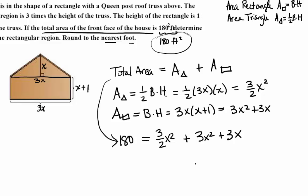What we have here is a quadratic equation because it has a power of 2 that we can solve to find one of the dimensions, the height of the truss, and then we can use that to get the dimensions we're looking for. So let's go ahead and solve this together.